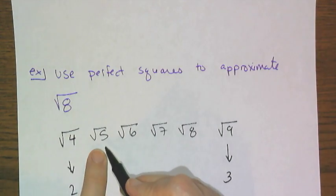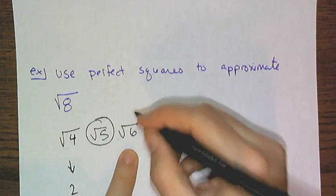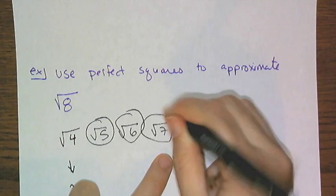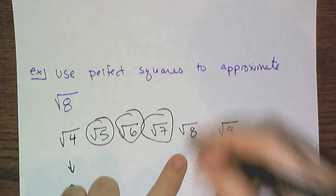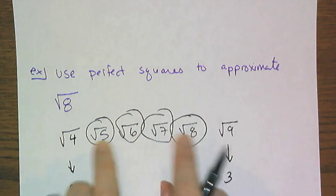The exact value of the square root of 5 is this symbol here. This symbol is how we write the exact value of the square root of 6. This is how we write the exact value of the square root of 7. And this is how we write the exact value of the square root of 8.